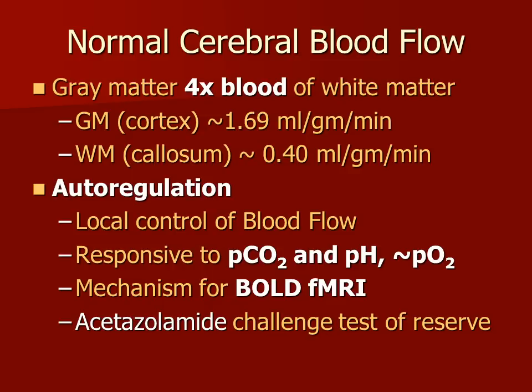The cerebral gray matter has 4 times the blood flow as compared to the white matter. This is typically assessed in a standardized way by looking at the gray matter of the cerebral cortex and the white matter of the corpus callosum.